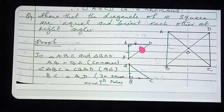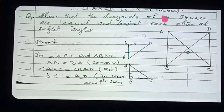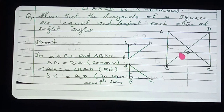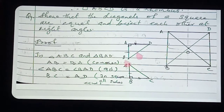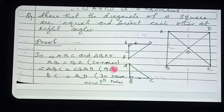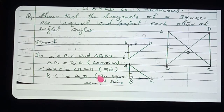For the first part — proving the diagonals are equal — I have drawn a separate diagram here with triangle ABC and triangle BAD drawn separately to avoid confusion. Now try to prove these two triangles congruent. How can we prove them congruent? You need three parts.